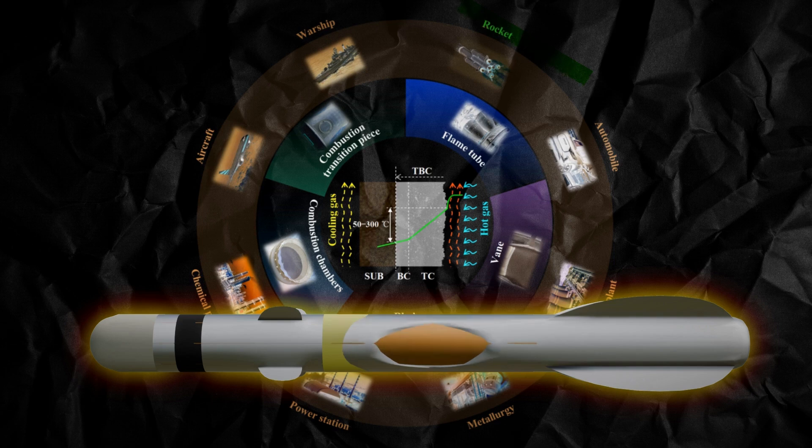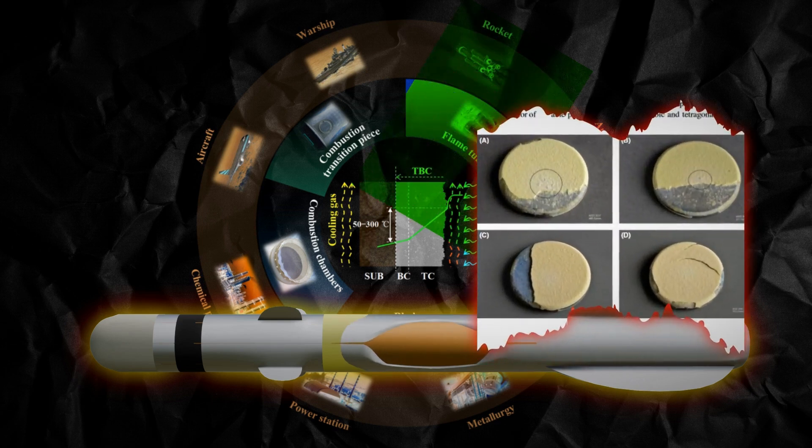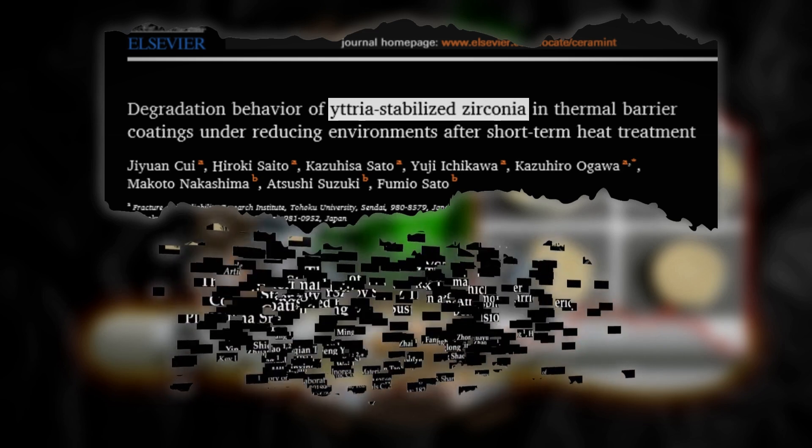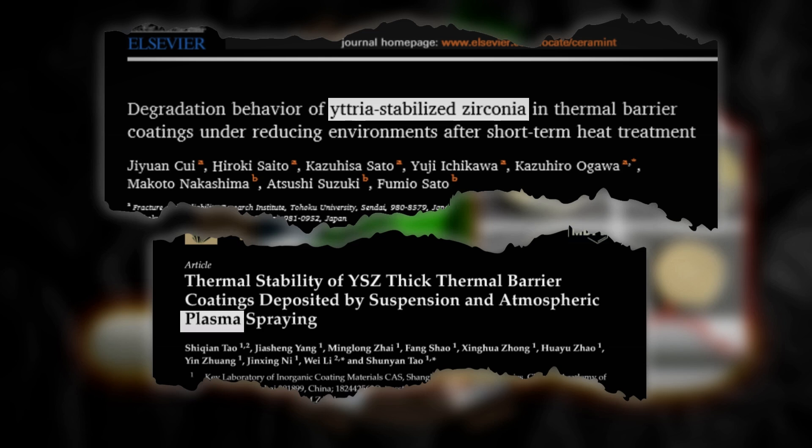Finally, we can't forget about advanced coatings. Think of them as a protective skin. Thermal barrier coatings made from materials like Ytreus-stabilized zirconia reflect heat away from the underlying structure. And plasma-sprayed coatings offer a durable and heat-resistant barrier.